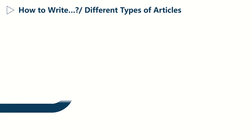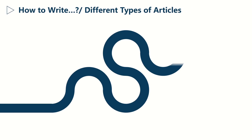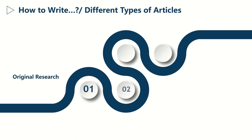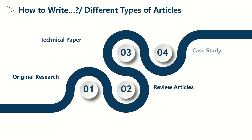However, today we will mainly focus on the four common types of articles, which include original research, review article, technical paper, and case study article.